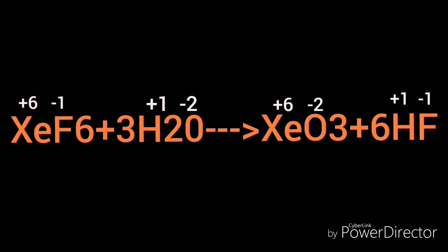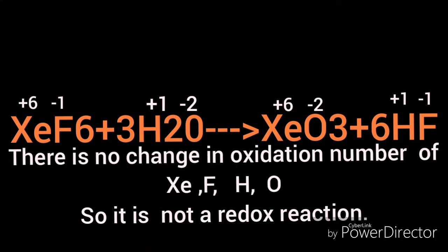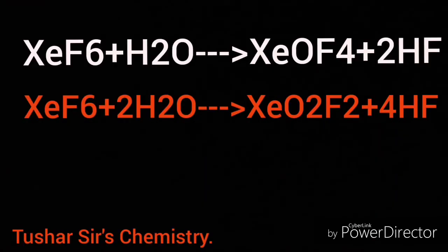Xenon hexafluoride on hydrolysis gives xenon trioxide XeO3 and HF. In this case, the oxidation number of xenon is plus 6, and in XeO3 the oxidation number of xenon is plus 6. So there is no change in oxidation number. This is not a redox reaction. When XeF6 is treated with limited amount of water, the products are as shown.